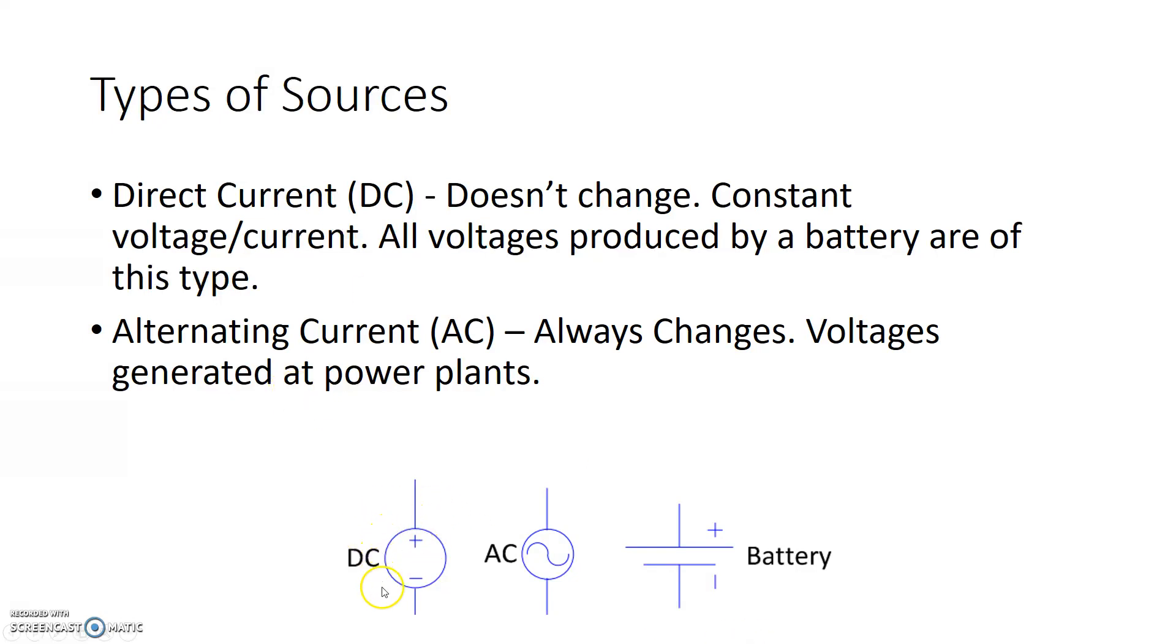So when we write voltage sources, for DC voltage sources, we'll basically use a circle with a plus minus and write the voltage value here. If we're explicitly showing batteries, this is the way to show it. AC, or alternating current, or the voltage that's available in the power outlets, it's generally shown as a circle with a sinusoidal source on it.